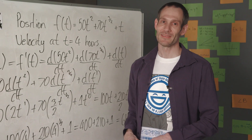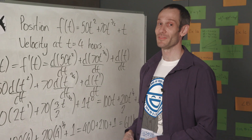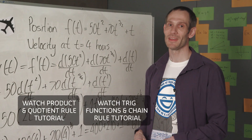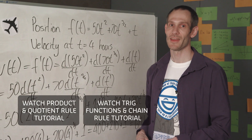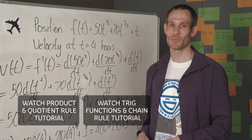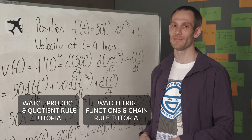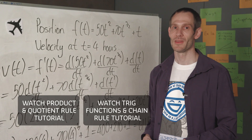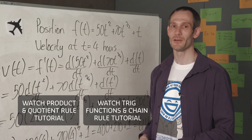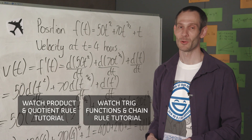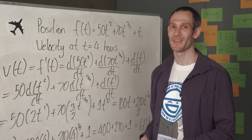So those are our basic elementary rules of differentiation. We now need to consider how to differentiate the product of functions as well as the ratio of functions. In the next video, we'll look at both the product rule and the quotient rules of differentiation. Thanks for watching.